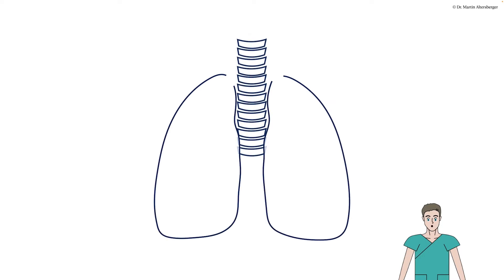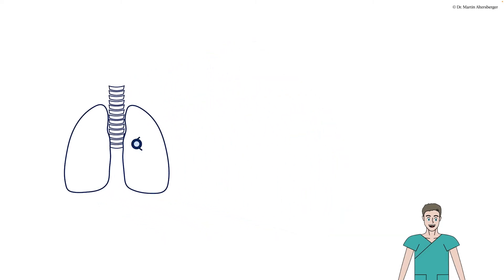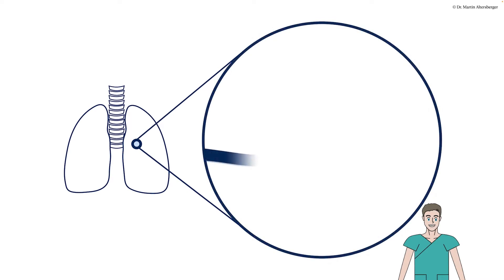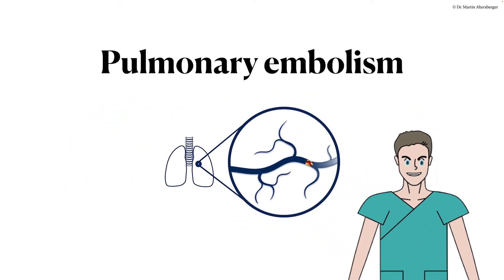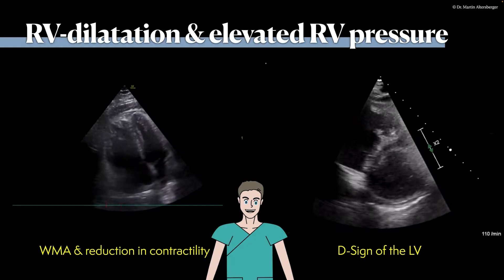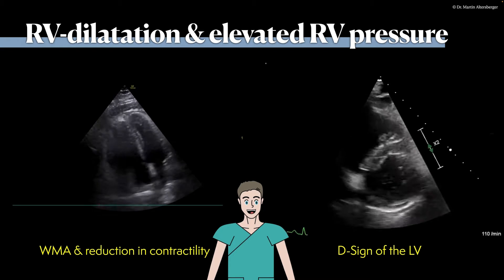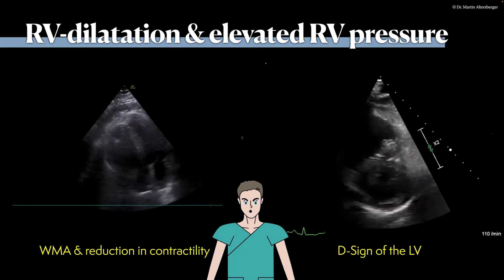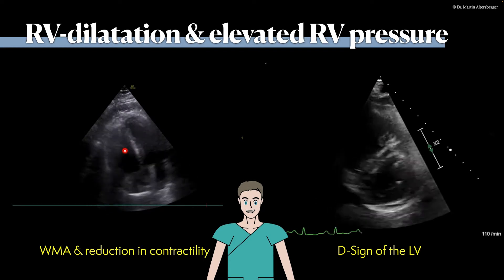A possible cause for right ventricular dilatation and hemodynamic problems of the right ventricle is a very important pathology: pulmonary embolism. In pulmonary embolism or lung infarction, you will see that the right ventricle is dilating because there is a pressure overload. In this case, we do see that the right ventricle is severely dilated.